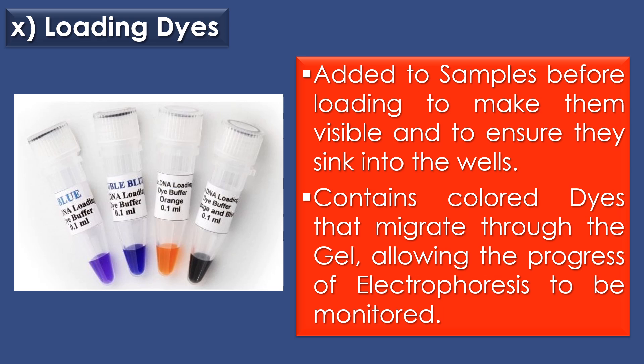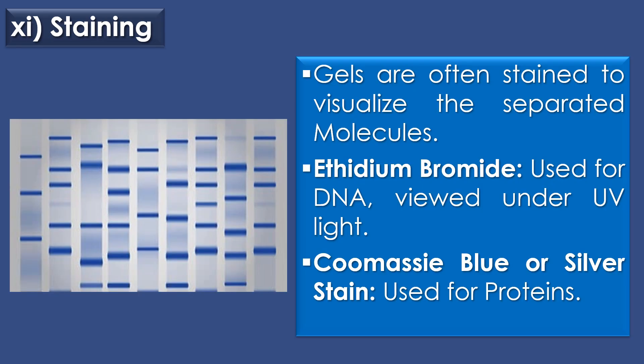The tenth component is loading dye. Loading dye is added to samples before loading to make them visible and to ensure they sink into the wells. Loading dye contains colored dyes that migrate through the gel, allowing the progress of electrophoresis to be monitored. The eleventh component is staining. After electrophoresis, gels are often stained to visualize the separated molecules. Two stains are commonly used: ethidium bromide, commonly used for DNA and viewed under UV light, and Coomassie Blue or silver stain, mainly used for proteins.